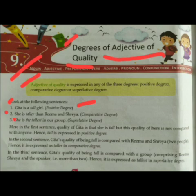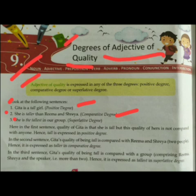She is taller than Reema and Shriya — comparative degree. Gita रीमा और Shriya से लंबी है। Third sentence is: She is the tallest in our group — it's a superlative degree. वो हमारे group में सबसे लंबी है, tallest है।